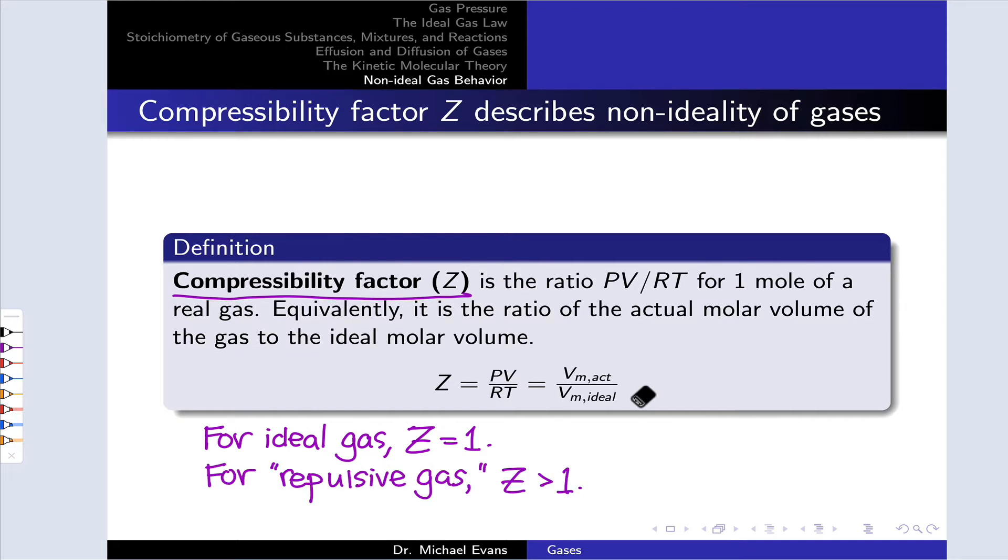When the value of Z is greater than 1, we can think of the gas particles as repulsive. The pressure times the volume is greater than would be expected based on the ideal gas model, or in terms of the molar volumes, the molar volume of the actual gas is greater than would be expected based on the ideal gas model. It's taking up more space than the ideal gas model would predict because of repulsions between the gas particles.